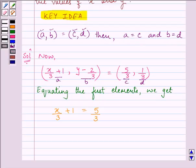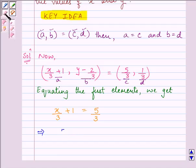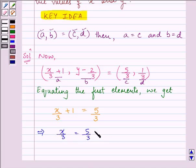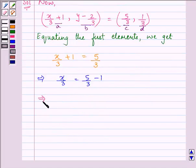Now, let us solve the following linear equation. x/3 is equal to 5/3 minus 1 which gives us x/3 equals 2/3 or x is equal to 2. Great.